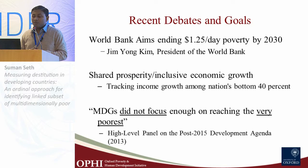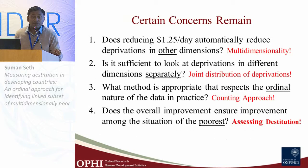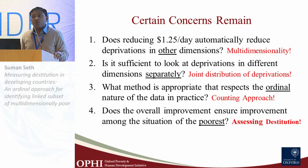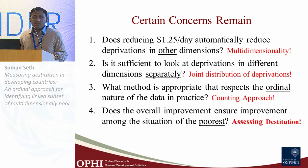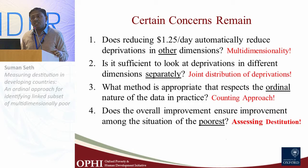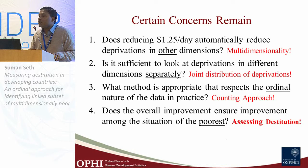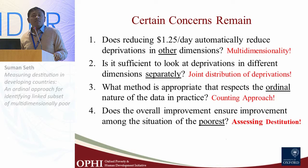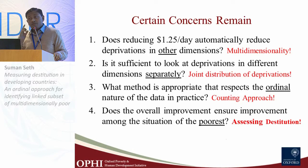Amidst all these goals and objectives, certain concerns remain. The first is: does reducing $1.25-a-day poverty automatically reduce deprivations in other dimensions? Empirical findings suggest it has not been the case. Is it sufficient to look at deprivations in different dimensions separately, as MDGs do, or is there a need to look at them jointly? What method is appropriate that respects the ordinal nature of dimensions? Some dimensions, like income, are cardinal, but others are ordinal — you only know the categories, not the distances between them.